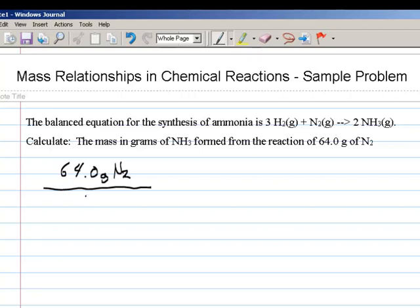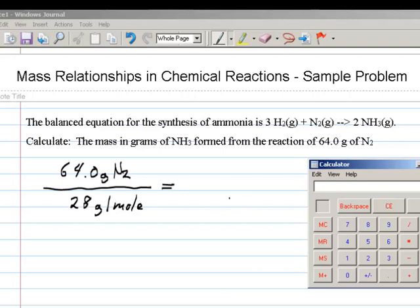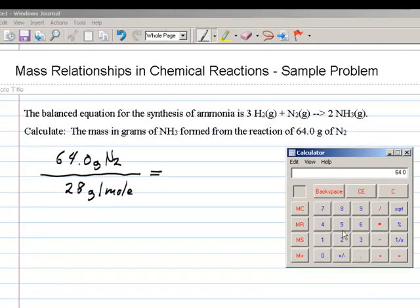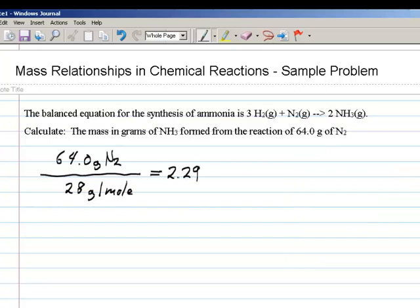For purposes of dimensional analysis and solving the problem, if we now divide that out, and take 64.0 divided by 28, we end up with 2.29 moles to three significant digits.